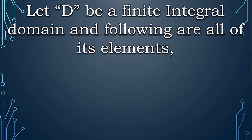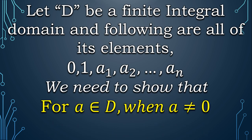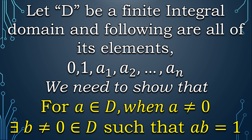Okay, now consider that D, our finite integral domain, has these elements: an additive identity zero, a multiplicative identity one, and some other random elements we are calling a₁, a₂, up to aₙ. So we will prove that for any random element other than additive identity zero, let's say a that belongs to D, we have another element b ≠ 0 in D such that ab = 1, showing that they are inverses of each other.